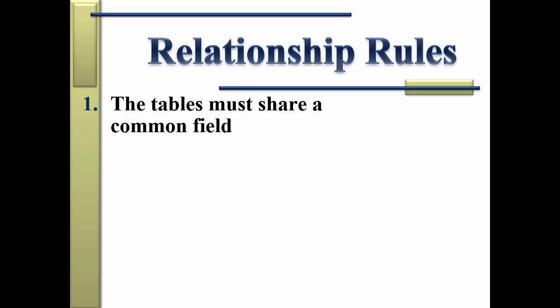In our example, we're going to have employees and their projects. The employees' table needs to talk to the projects table so that you can ask the question in a query: who's working on what project? But you don't want to hold all of that in one gigantic table — you need two tables. Those two tables have to have a communication path, so they have to share a common field.